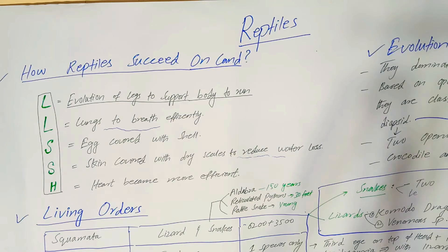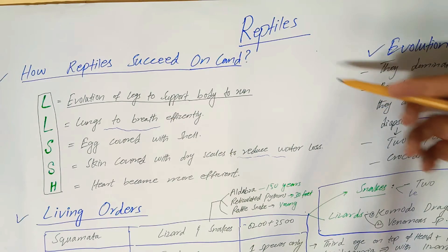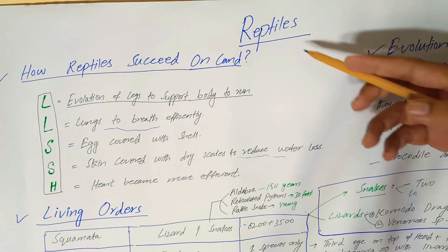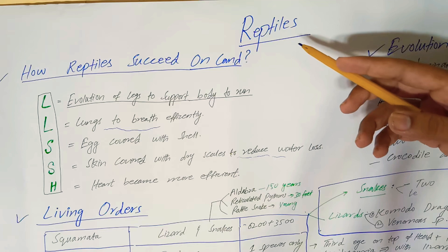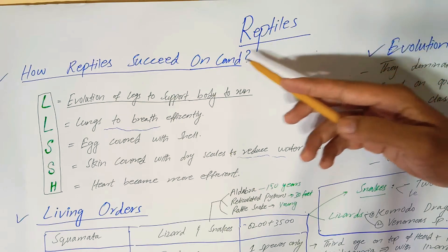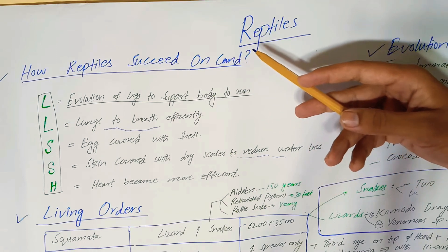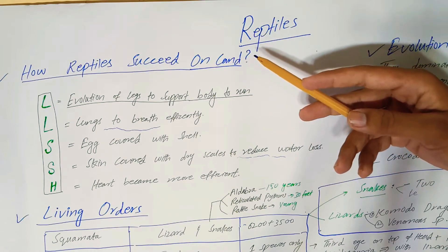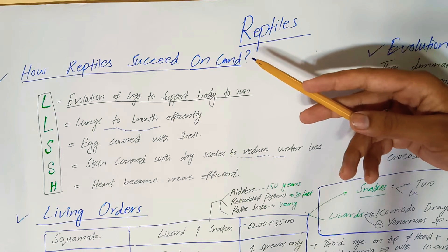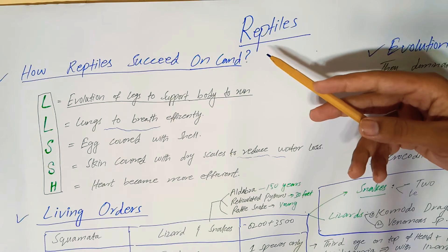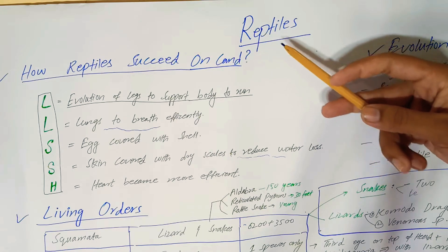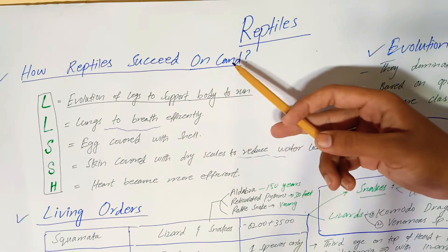Hello guys, hope you are fine and doing well. Today I will discuss Class Reptilia. We are discussing Phylum Chordata, which is one of the most successful phyla in the animal kingdom. We have divided Phylum Chordata into Class Pisces and Class Amphibia, which we discussed in the last video. Today I am going to discuss Class Reptilia.